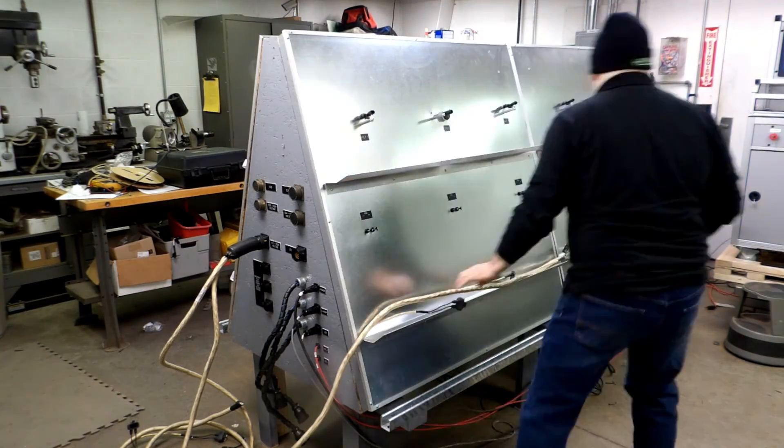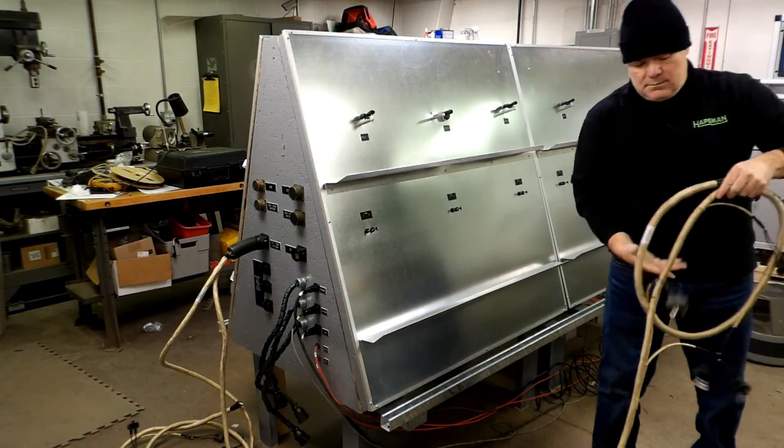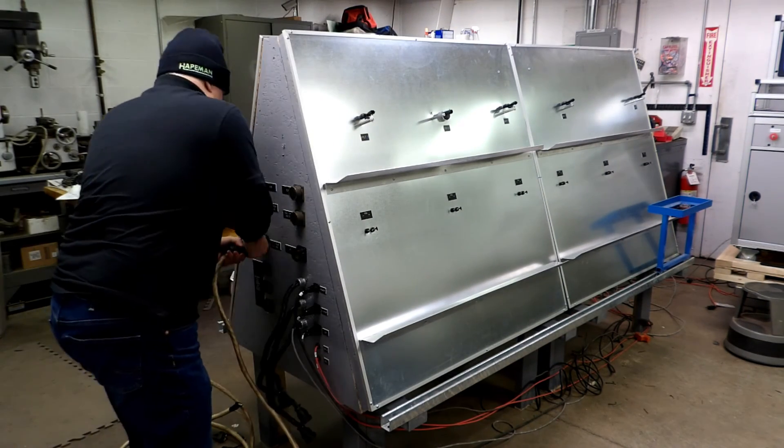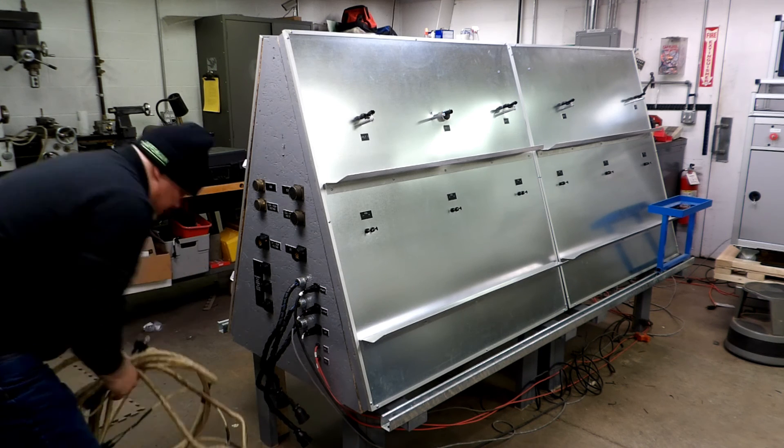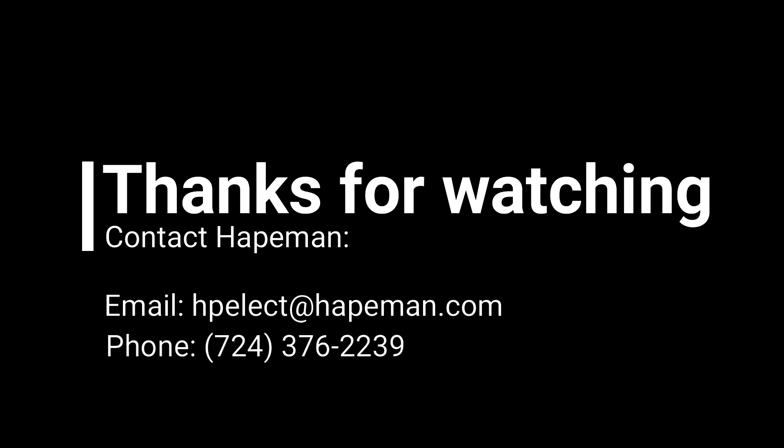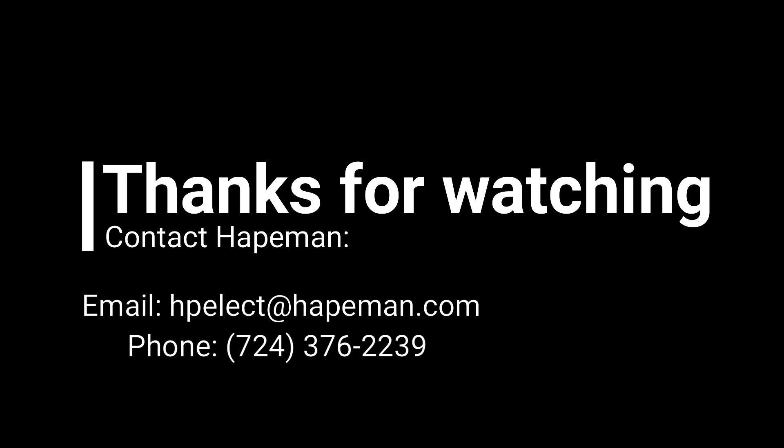My name is Jake Peters from Haightman Electronics and you have been watching a video on the use of our locomotive harness tester. If you want more information or need to contact us for support, you can reach us by email at hpelect at haightman.com or by phone at 724-376-2239. Thanks for watching.